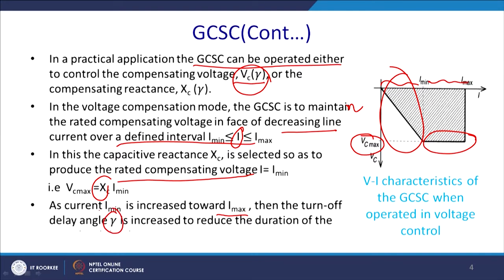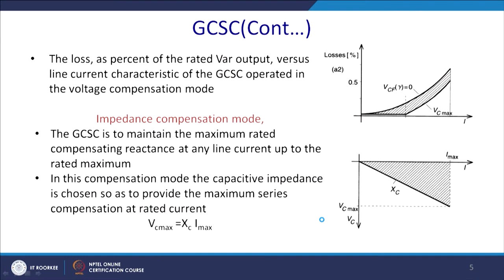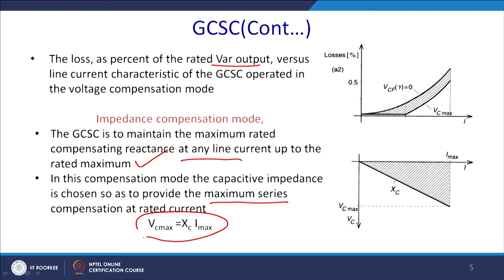Here the voltage remains constant in one region, and the slope remains constant (constant impedance) in the other. As the current I_min increases towards I_max, the turn-off angle delay lambda is decreased to reduce the duration of conduction. The loss as a percentage of rated VAR output versus current characteristics of the GCSC operated in voltage compensation mode is shown here.